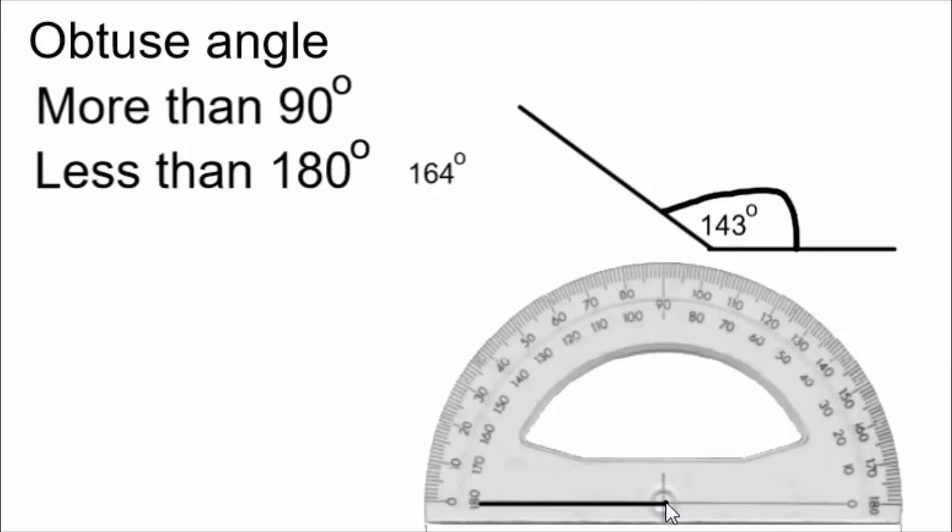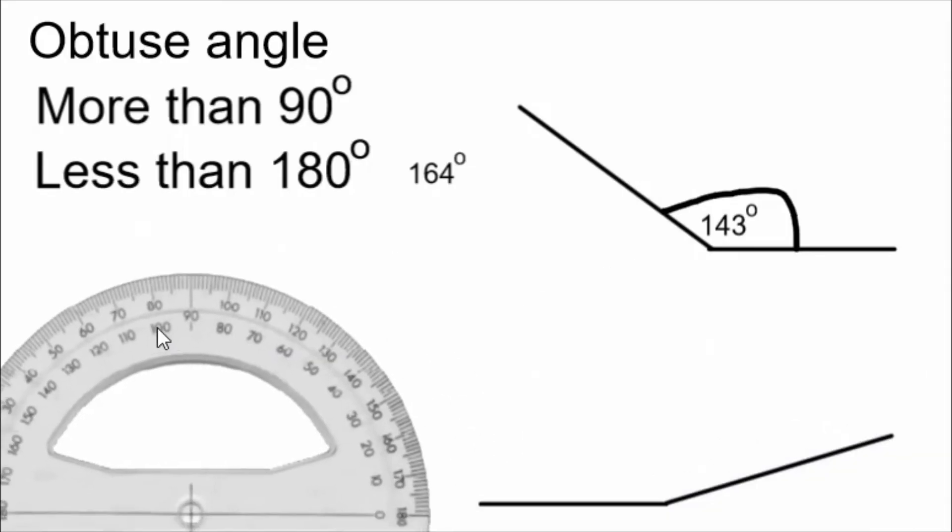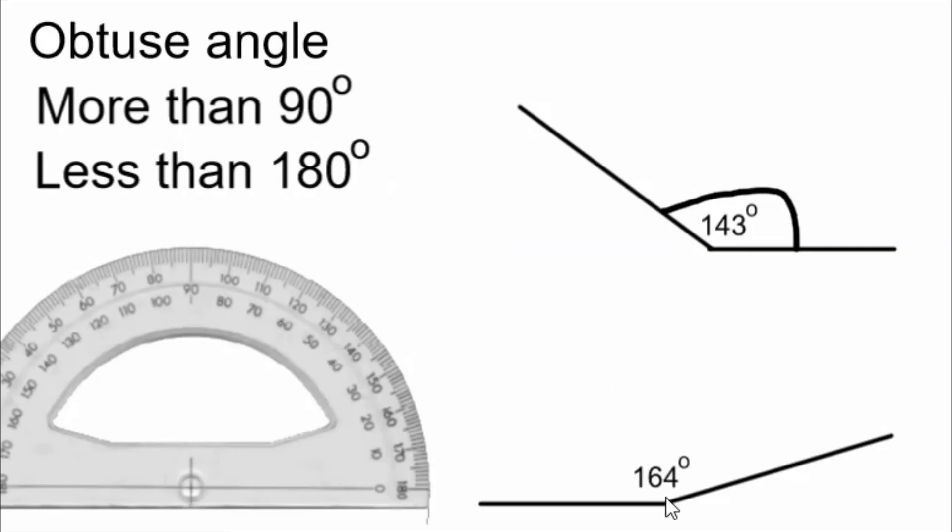From the zero dot, I draw a line that goes through 164 degrees, which is right about here. I move my protractor out of the way, and I label my angle. Yes, that arc is pretty messy too.